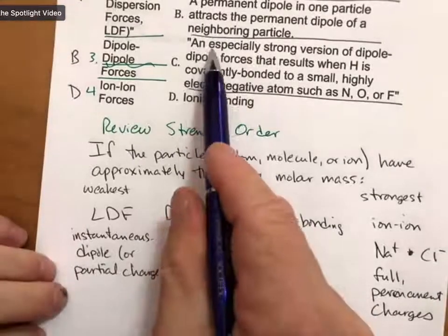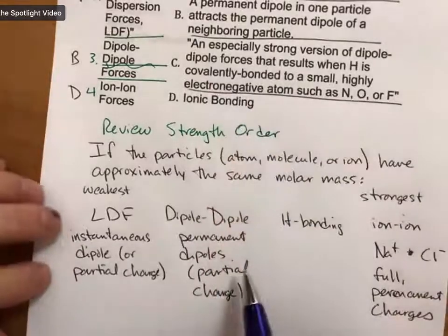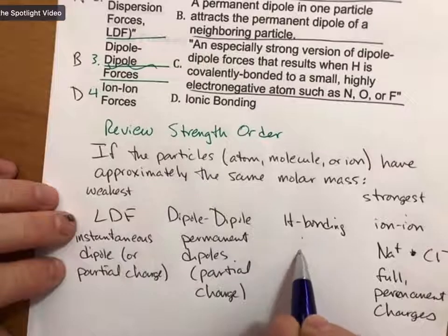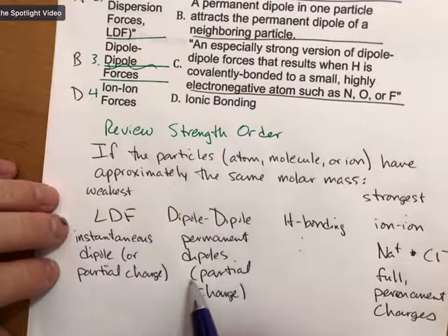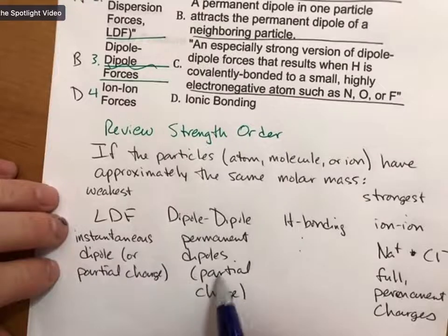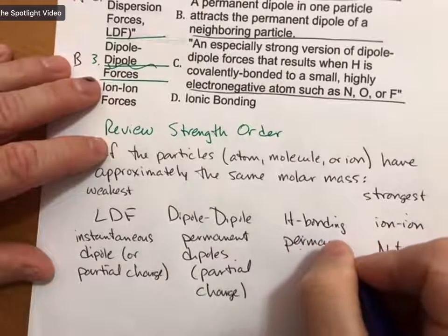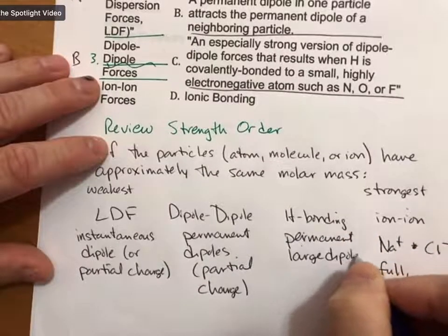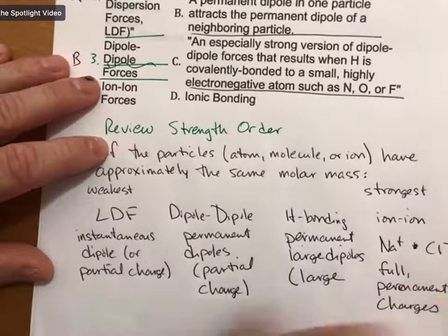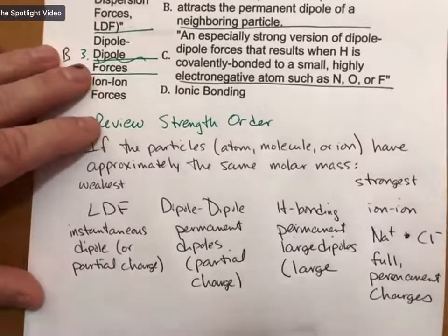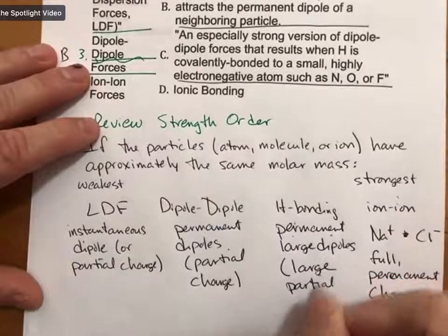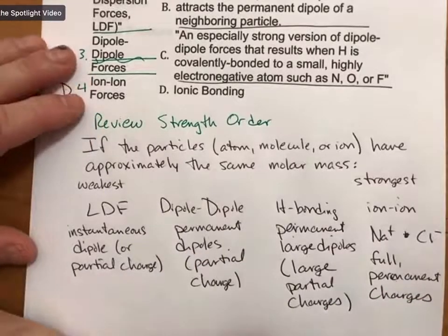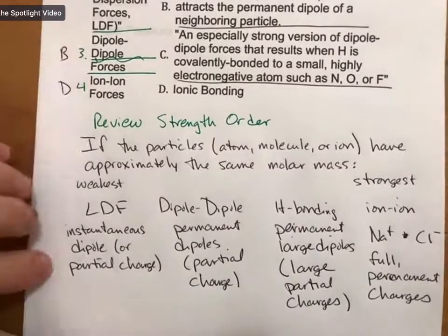And then we have hydrogen bonding, which as it says, is an especially strong version of dipole-dipole. So the only difference here is I'm going to write permanent large dipoles. And then in parentheses, I'm going to write permanent large partial charges. Permanent large dipoles. And large dipoles just means large partial charges. So any questions with what I have down here so far?